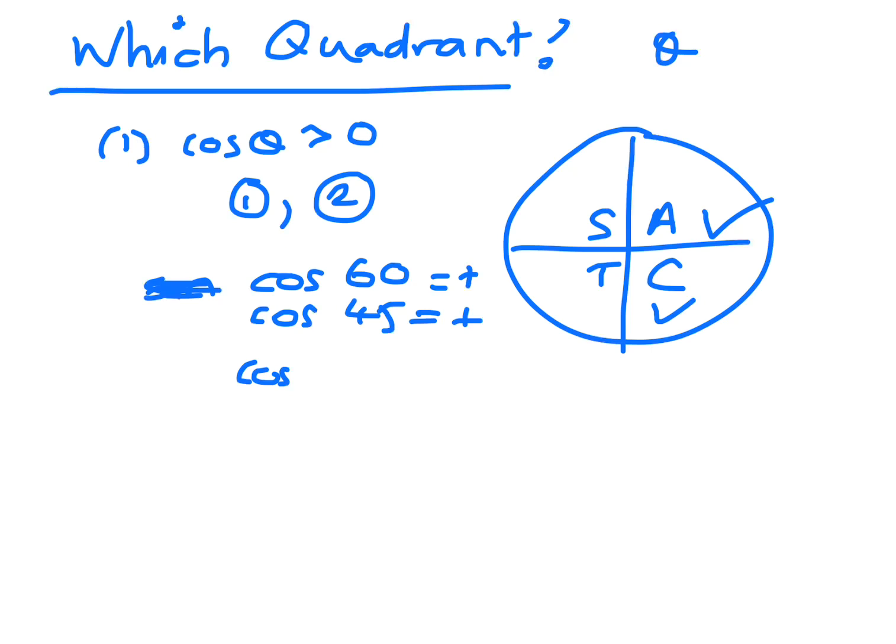Whereas if you did an angle in that fourth quadrant, like 300, for cos you'll also get a positive answer. So that's where cos is positive.